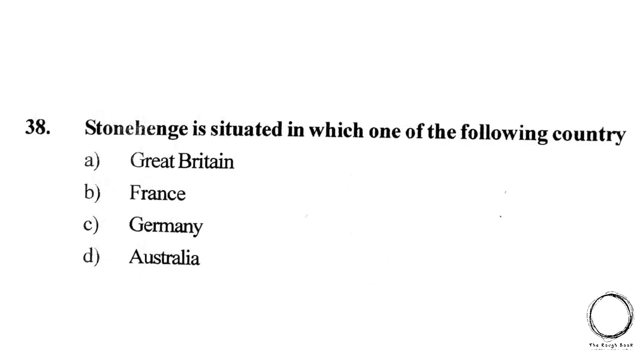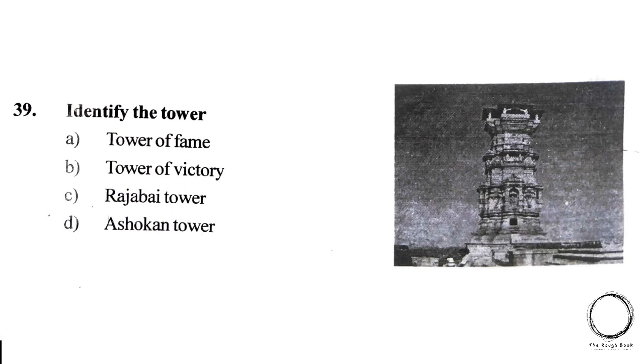Next question: Stonehenge is situated in which country? A) Great Britain, B) France, C) Germany, D) Australia. The answer is A) Great Britain. Next question: Identify the tower from the image — A) Tower of Fame, B) Tower of Victory, C) Rajabai Tower, D) Ashoka Tower. The answer is A) Tower of Fame.